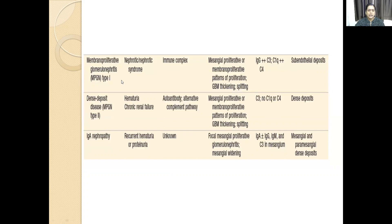Coming to MPGN type 1, MPGN type 2, and IgA nephropathy, which we will deal with now. MPGN type 1 is nephrotic, immune complex mediated, also called mesangiocapillary. There can be GBM thickening or splitting, which gives a tram track appearance — like there is one glomerular basement membrane and in response to proliferation, formation of another membrane.